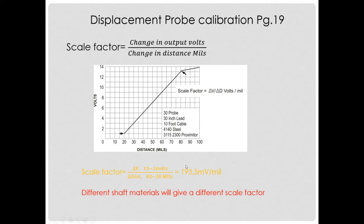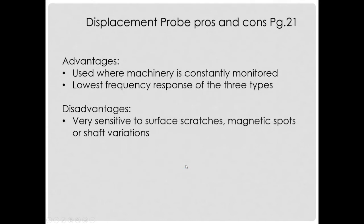Different shaft materials will have a different scale factor — that's why they must be conductive. Advantages of displacement probes: they are typically used where machinery is constantly monitored, and they have the lowest frequency response of the three types. Disadvantages: they are very sensitive to surface scratches, magnetic spots, or shaft variations.